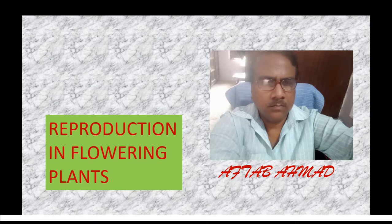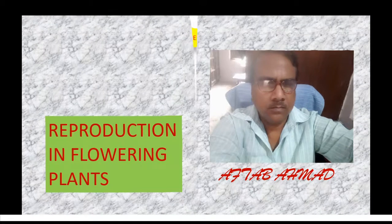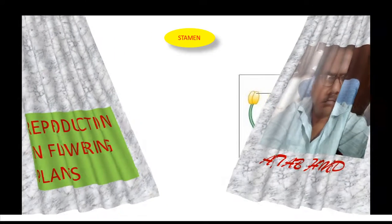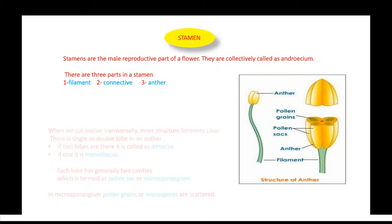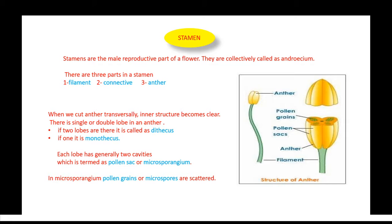Today we will study the structure of stamen and the microsporangium. As we have already studied, a flower has four floral whorls comprising accessory and essential whorls. There are two structures in the essential whorl: androecium and gynoecium. Androecium is the male reproductive part of the flower.